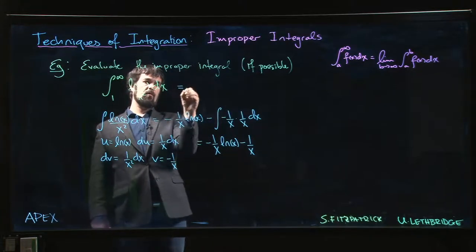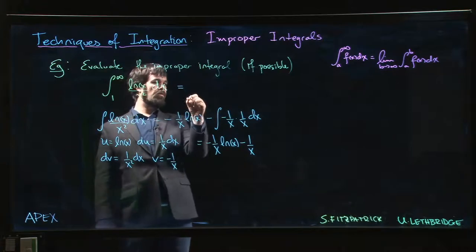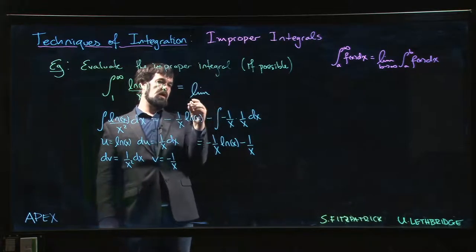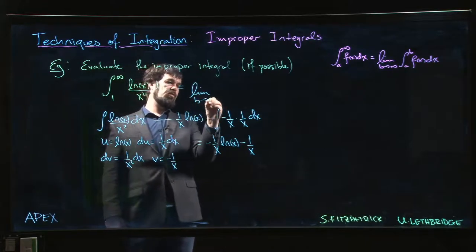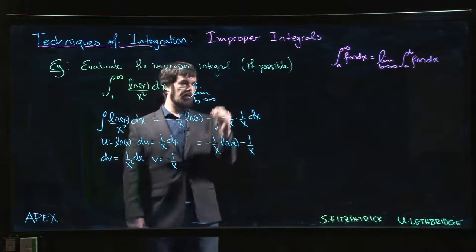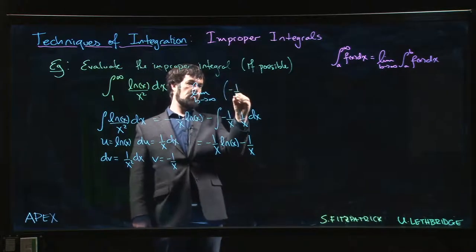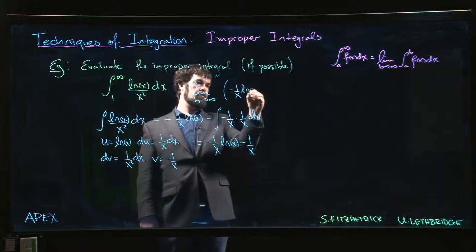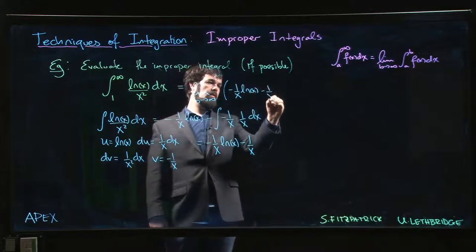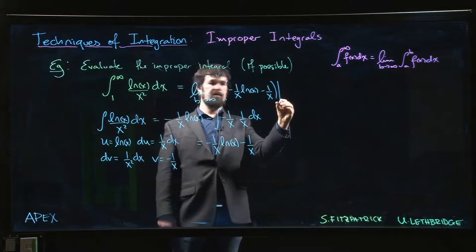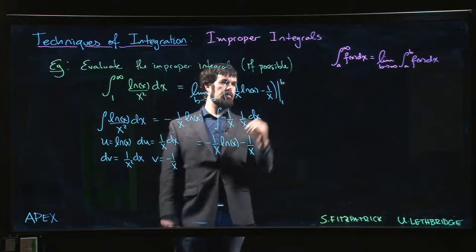So we come back up to here and we say, all right, so this improper integral should be the limit as b goes to infinity of minus 1 over x log x minus 1 over x evaluated from 1 to b.